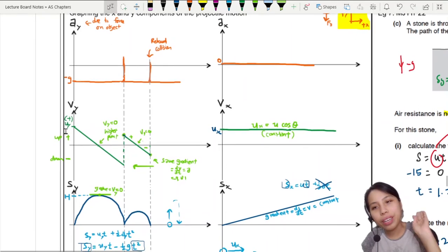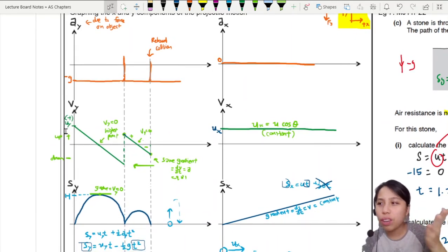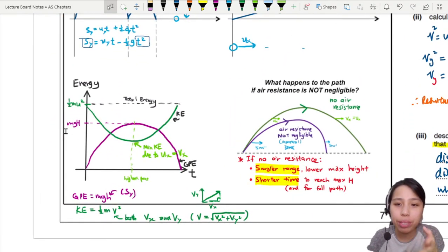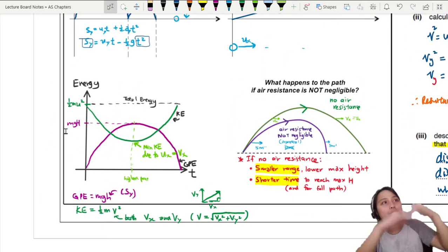In the previous lecture videos, we've looked at tons of graphs: acceleration, velocity, displacement, and also energy and what happens to the shape of your path if there's some air resistance included.